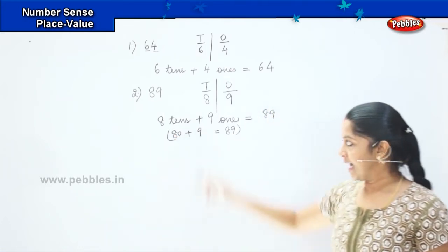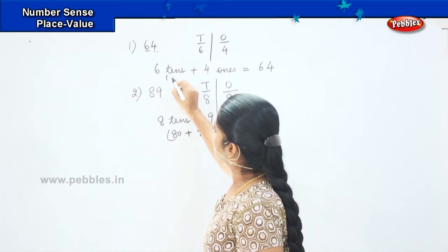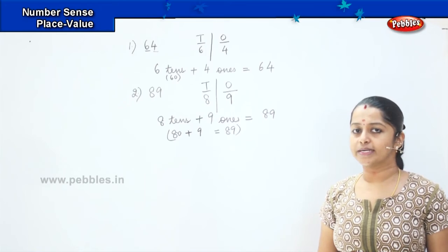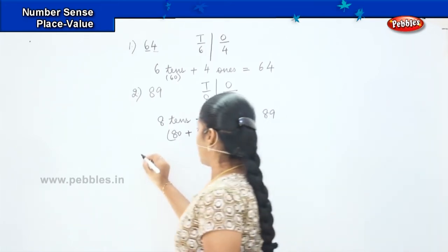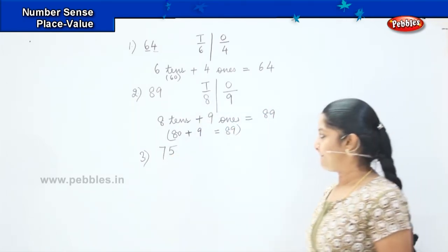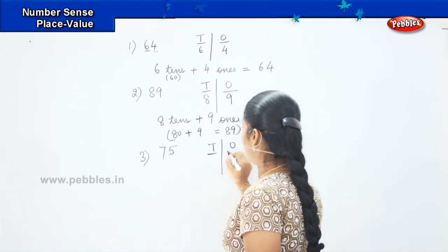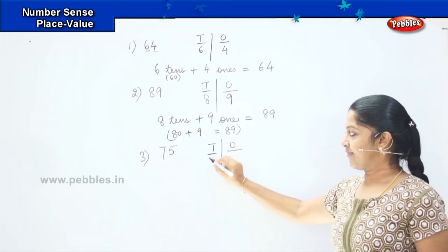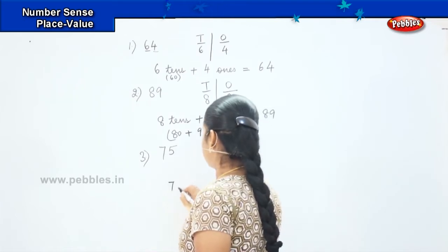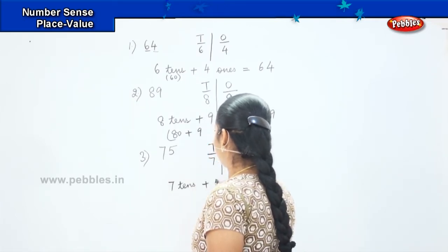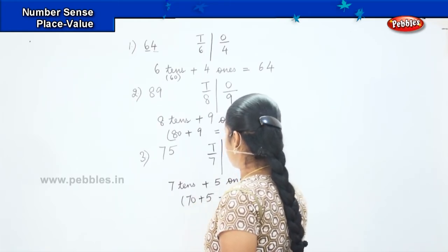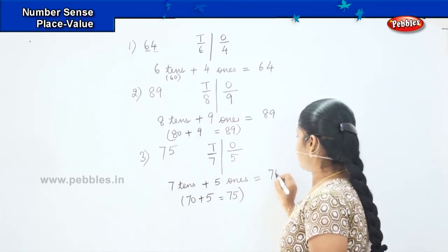Eight tens means eighty. Similarly, six tens represents sixty — sixty plus four equals to sixty-four. Shall we do one more? Here comes my next question, which is seventy-five. T and O: seven in T and five in O. I will write as seven tens plus five ones, which is seventy plus five equals to seventy-five.